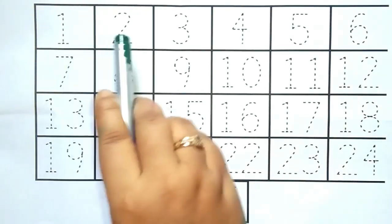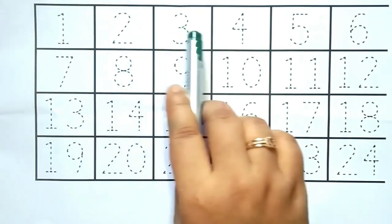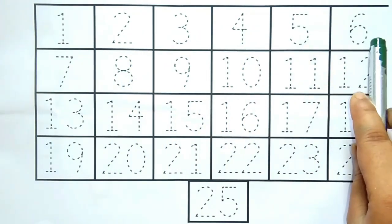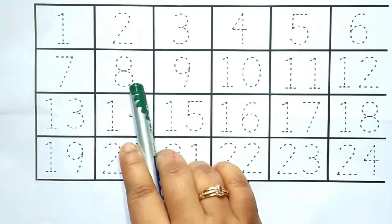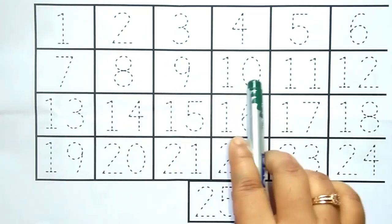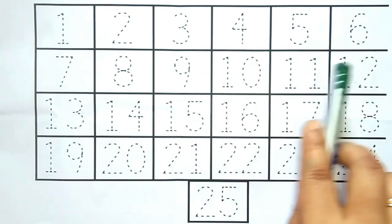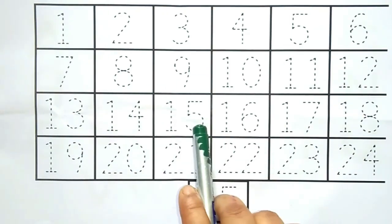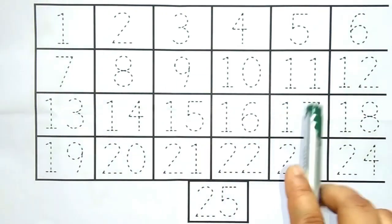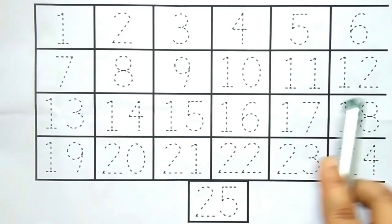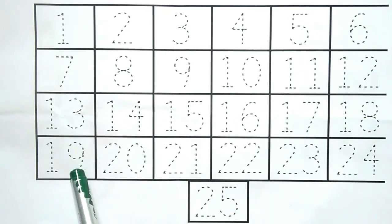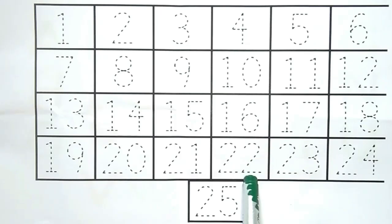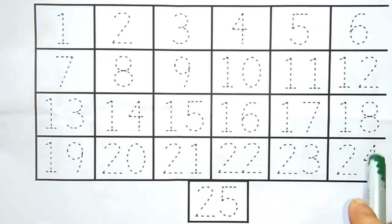1, 2, 3, 4, 5, 6, 7, 8, 9, 10, 11, 12, 13, 14, 15, 16, 17, 18, 19, 20, 21, 22, 23, 24.